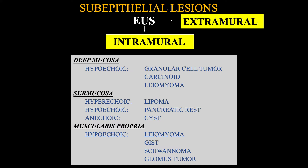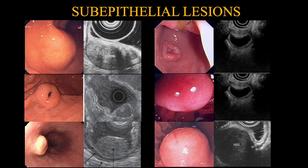As with deep mucosal lesions, all lesions originating from the muscularis layer are either a leiomyoma, cyst, schwannoma, or a glomus tumour. All these images of lumps and bumps have verified pathology.